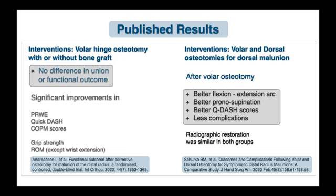When we looked at published results on the topic, we found two interesting papers. The paper on the left looked at the technique of volar hinge osteotomy with or without the use of bone graft, and the authors could not find any difference in union or functional outcome — all patients in both groups showed excellent improvement in patient-reported outcome measures. The paper on the right looked at whether volar or dorsal osteotomy is better for these corrections. The authors found that after volar osteotomy, patients showed better range of motion, patient-reported outcome scores, and fewer complications, though radiographic restoration was similar in both groups.